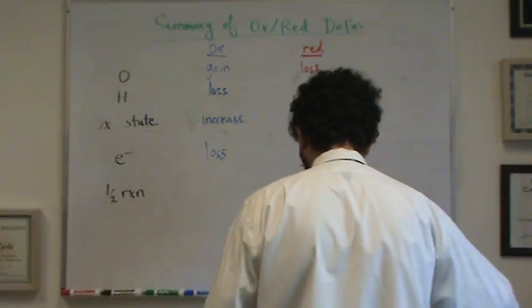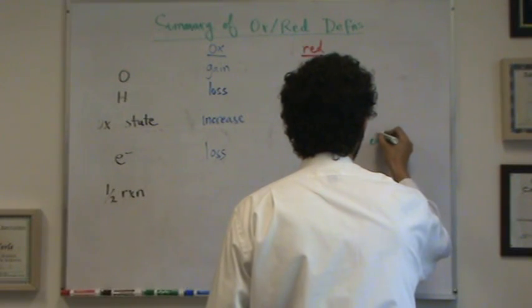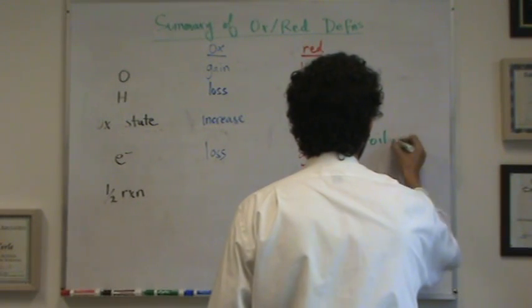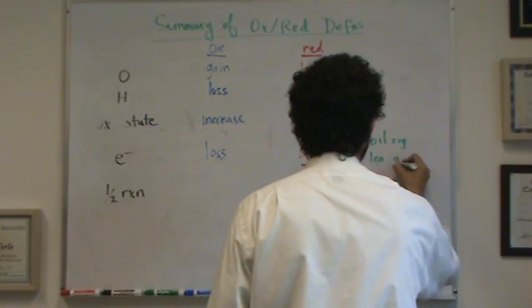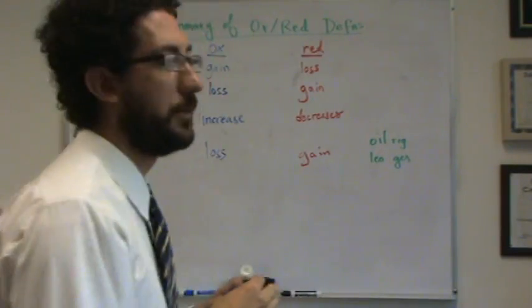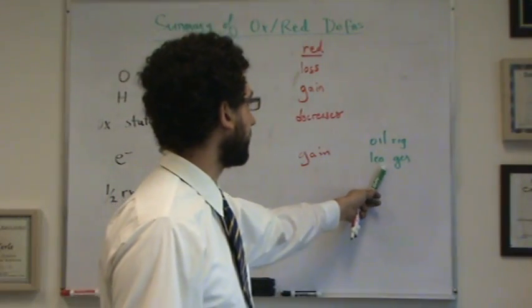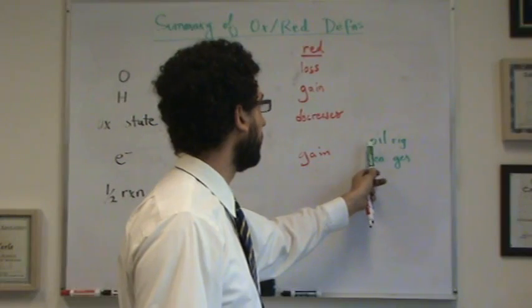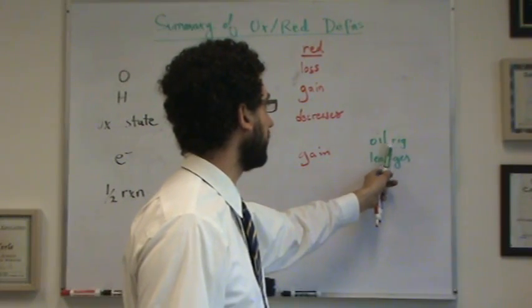And you might have learned this if you've learned the acronyms like OIL, RIG, or LEO, says GR. So, this means lose electrons, oxidation, gain electrons, reduction, or oxidation is loss, reduction is gain.